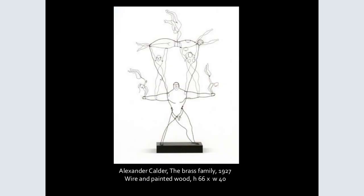Alexander Calder made really interesting large sculptures, but he also did these smaller pieces. He called them 'the circus,' where he took one line and used it, bending and twisting it to make figures. If we look at this, it's just a line — a strong man holding up all these little figures. Just a great use of line.